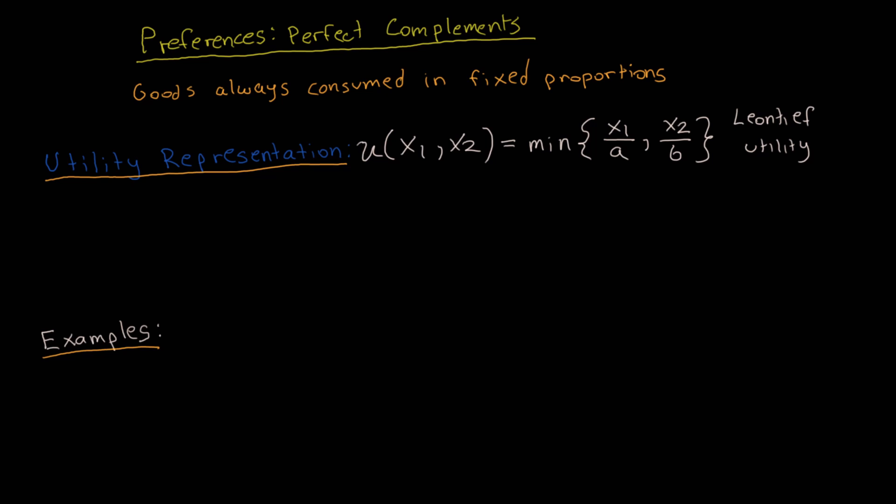One way we can interpret this utility function is as follows: a consumer prefers to consume a units of good 1 for every b units of good 2. That's what these parameters a and b refer to, and this will become more clear as we go over some examples. I'm going to go ahead and write this minimum operator as a piecewise function.